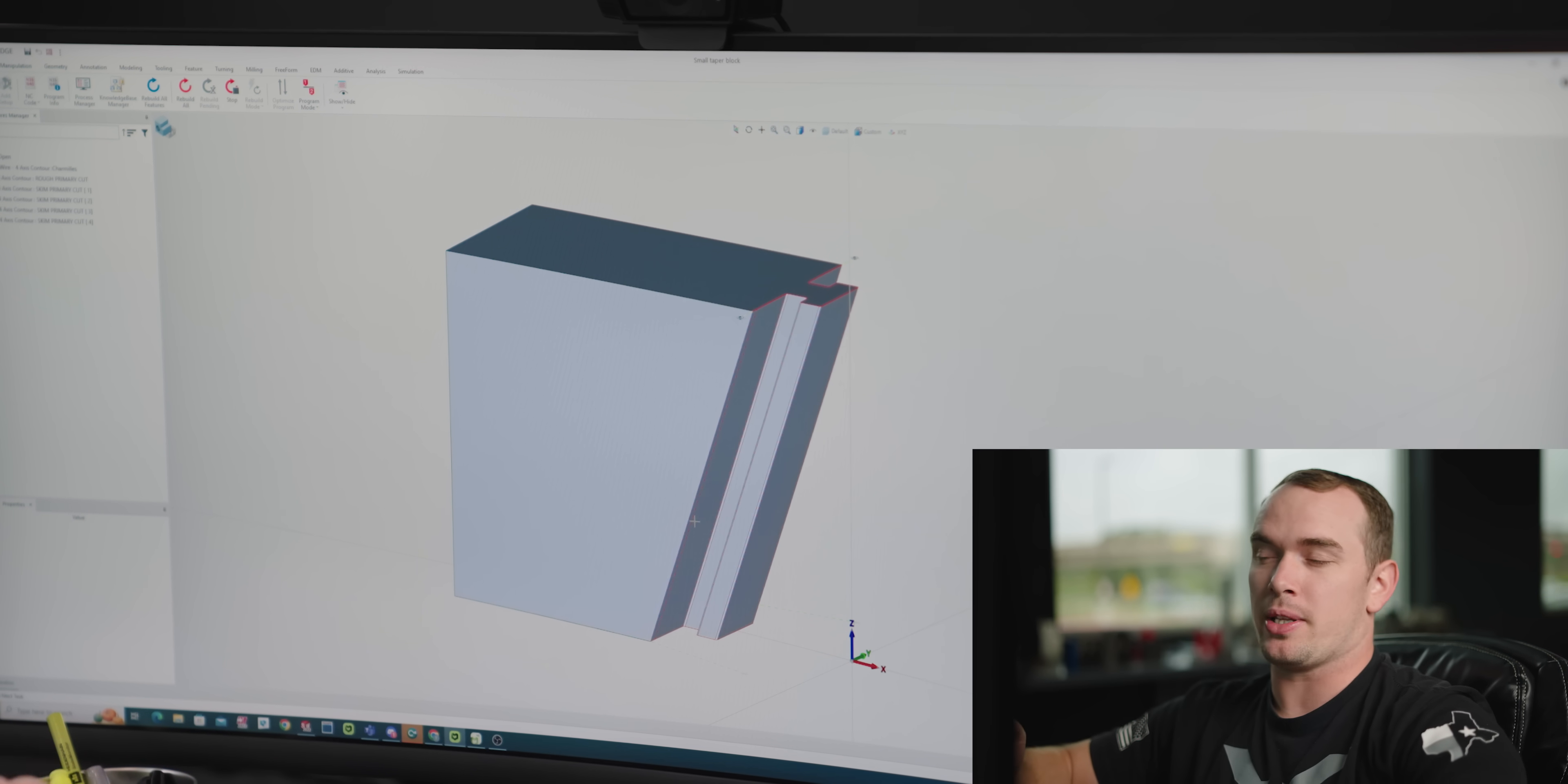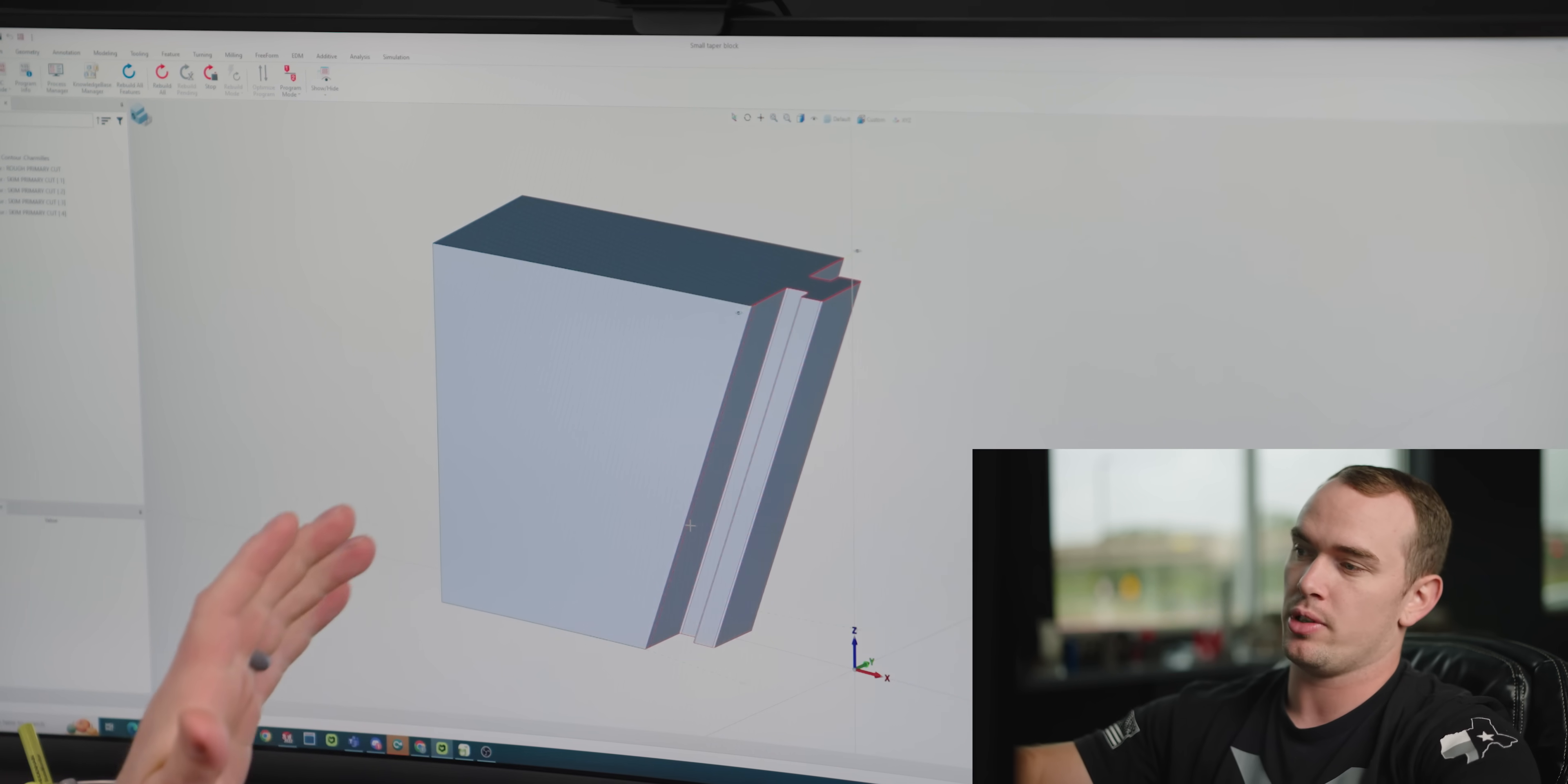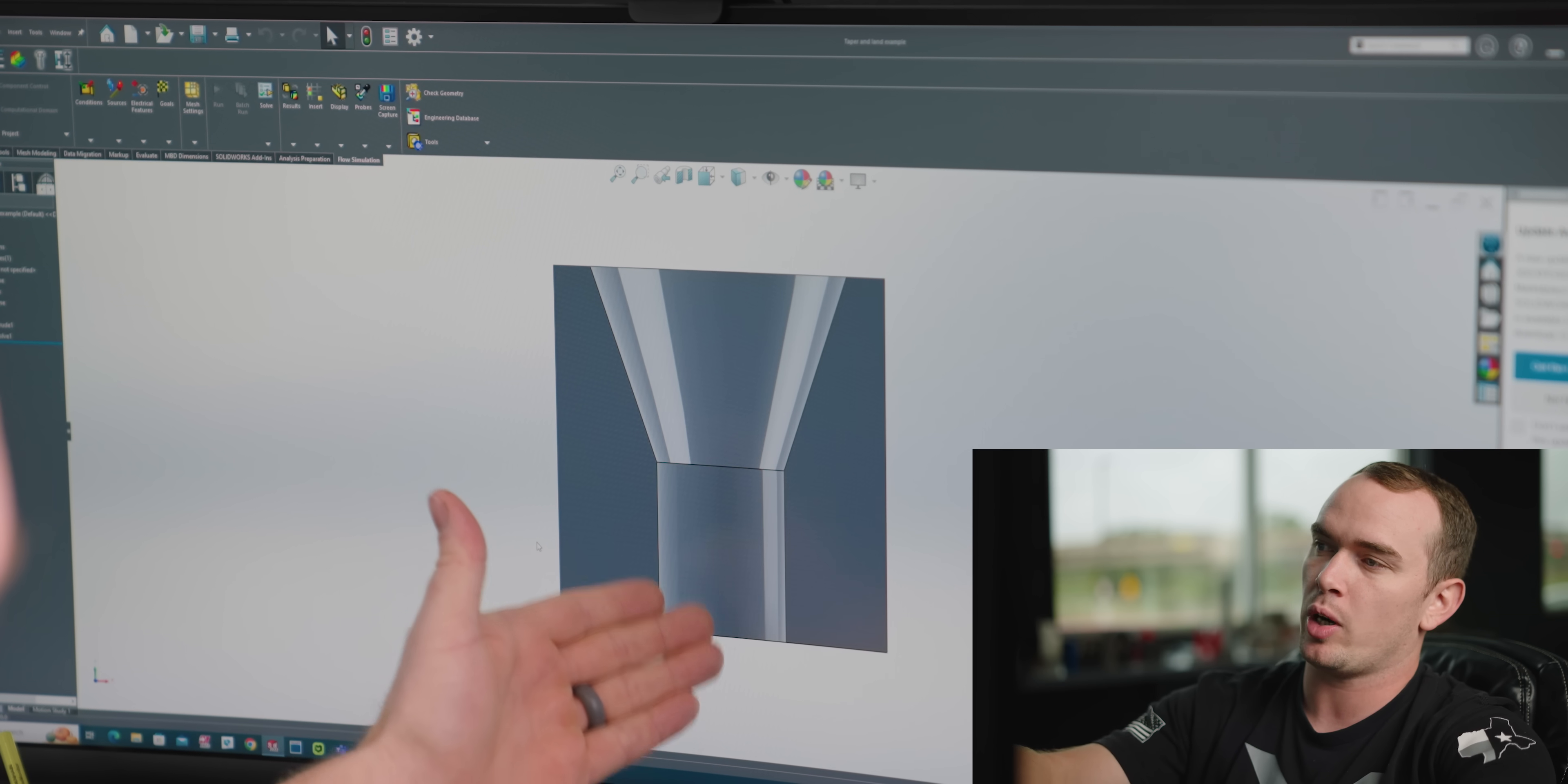The most important part of programming a taper on a wire EDM is you need to tell the EDM where to hold size so it needs to know where the start of your taper is and also where the end of your taper is. Now this is important because you can also cut features where your taper doesn't go all the way to the bottom of your part.